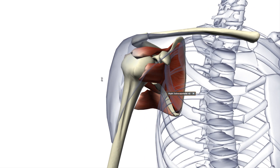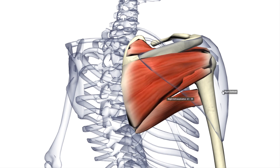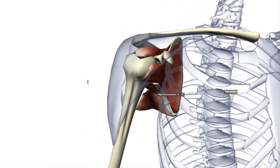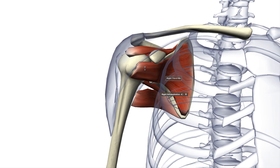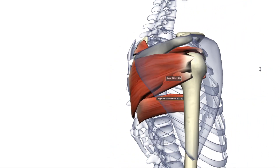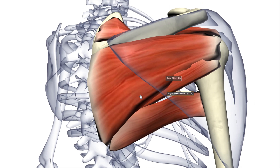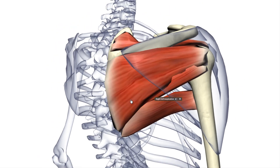One more thing I forgot to say about the teres minor is that it is innervated by the axillary nerve. The antagonist of the subscapularis is the teres minor and the infraspinatus muscle.